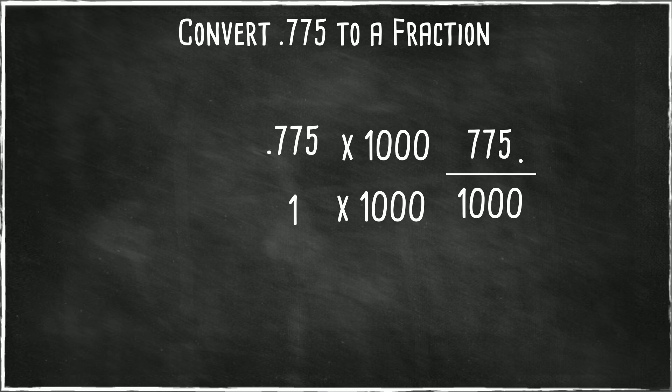I know that both of these are divisible by 25. 775 divided by 25 is 31. 1,000 divided by 25 is 40. 31 is a prime number, so I know that it is simplified.